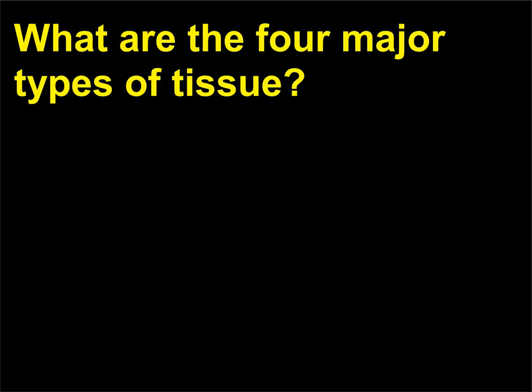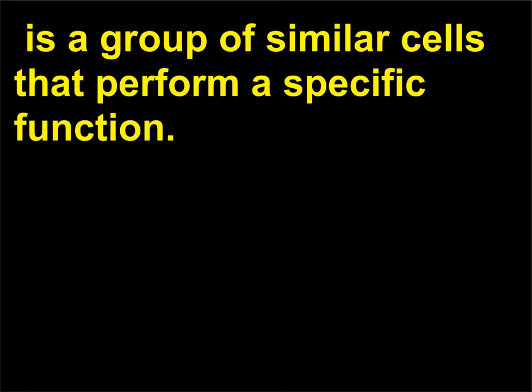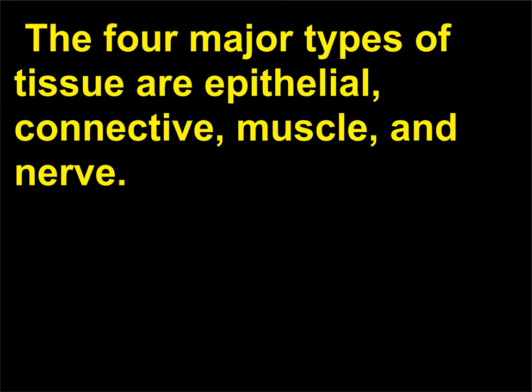What are the four major types of tissue? A tissue (from the Latin texere, meaning to weave) is a group of similar cells that perform a specific function. The four major types of tissue are epithelial, connective, muscle, and nerve.